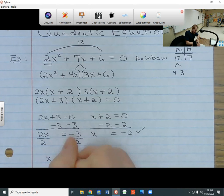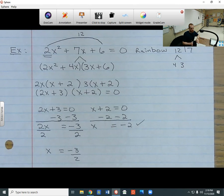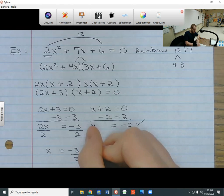And then on this side, I'm going to get negative 3 over 2, which is a fraction. So you could also write this fraction as a decimal, but I'm going to keep it written as a fraction for now. So that's going to be my two answers: negative 3 over 2 and negative 2.